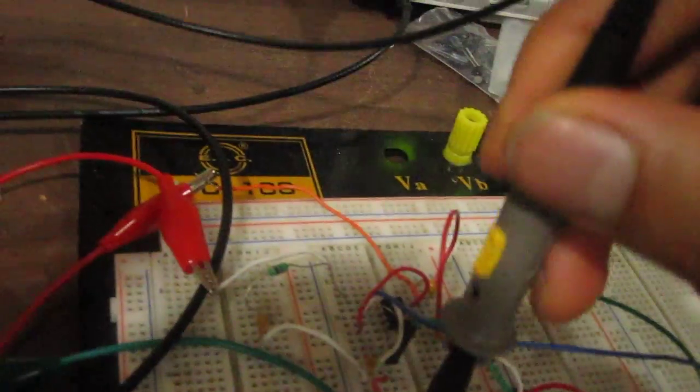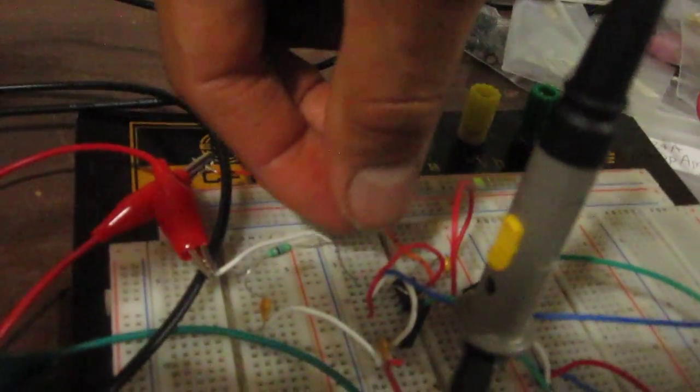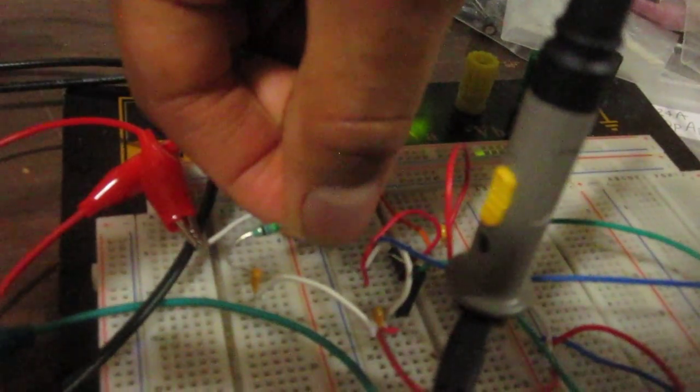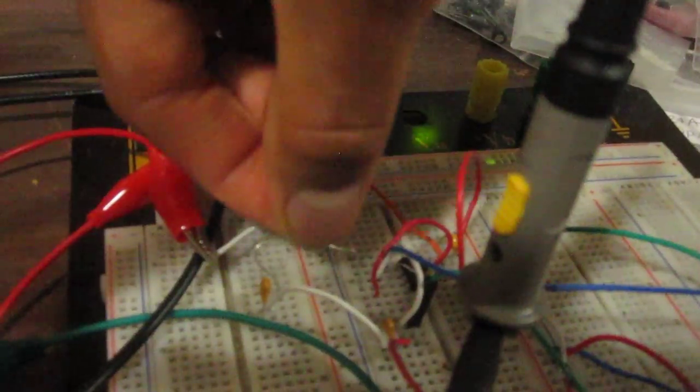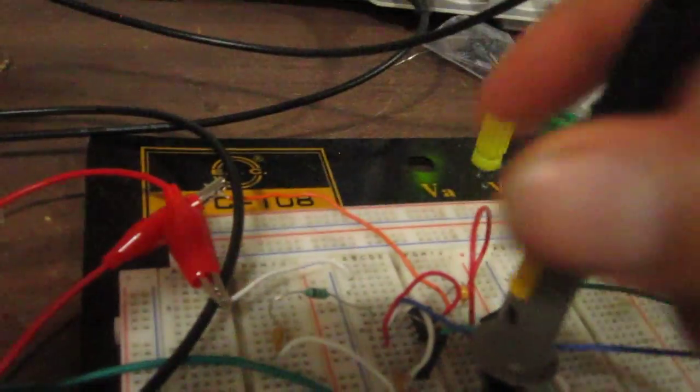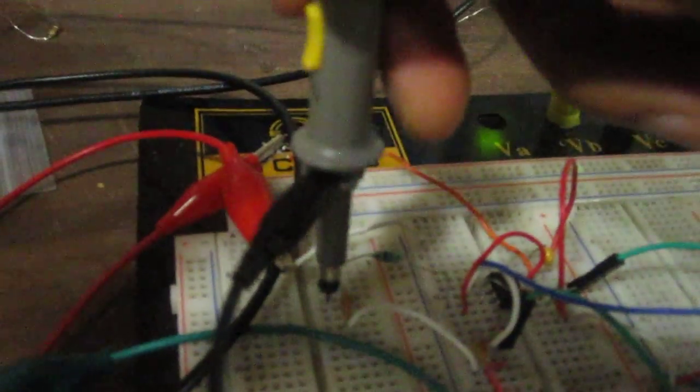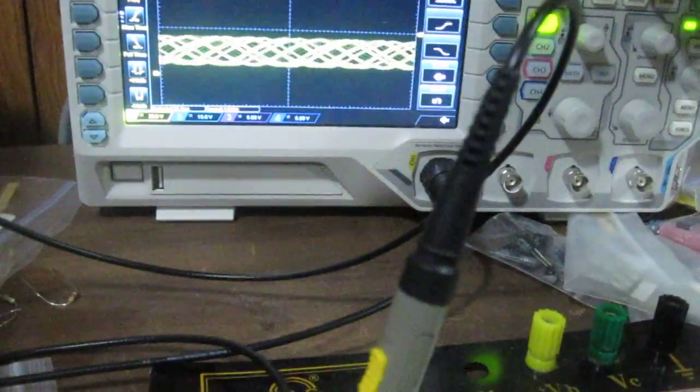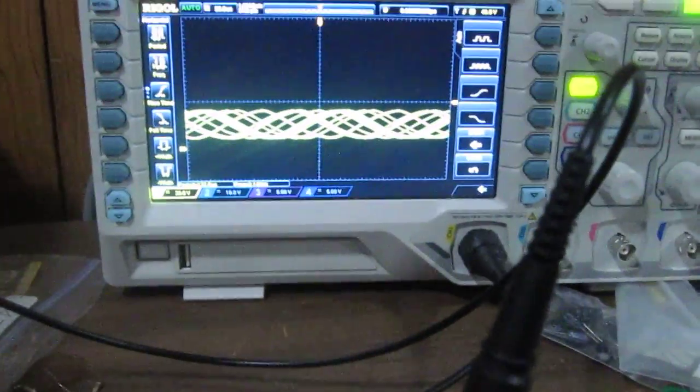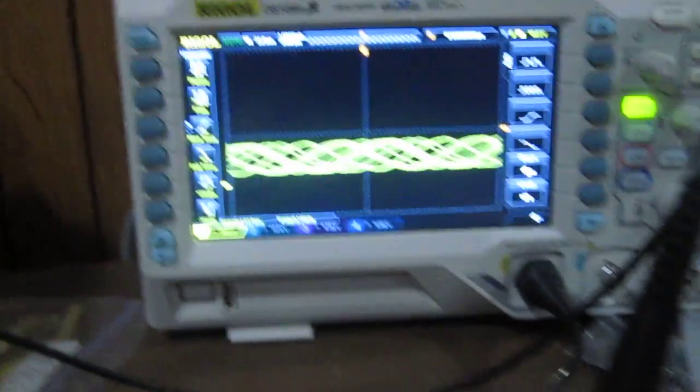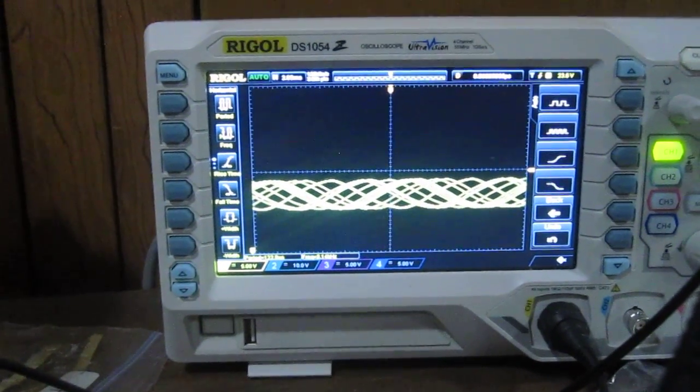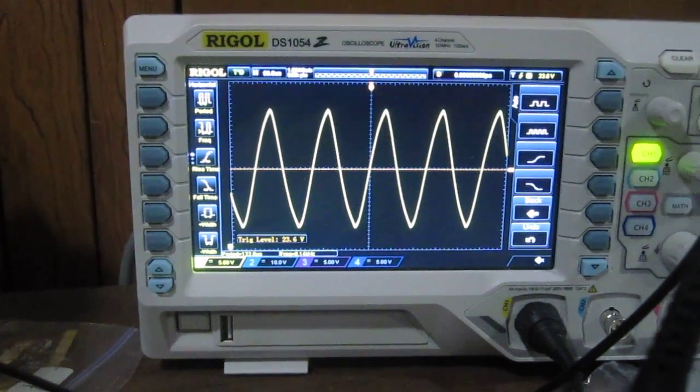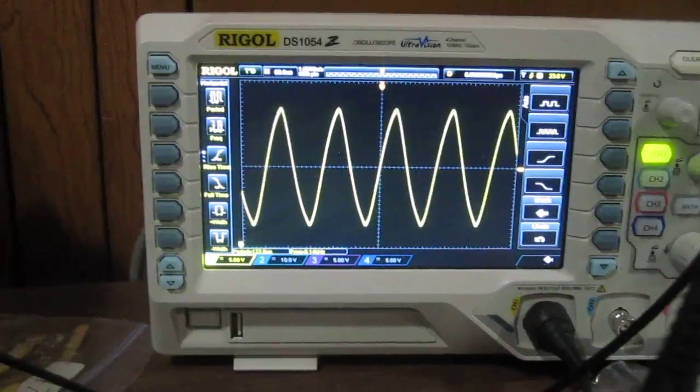Now, I'm going to move the probe again. And I'm going to put back the LC network into the circuit. Move the probe back to the output. And now you can see the sine wave signal at the output.